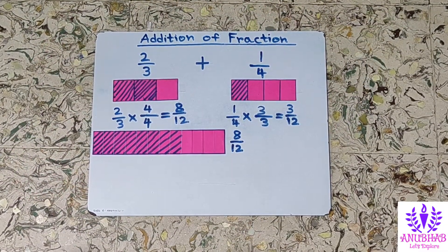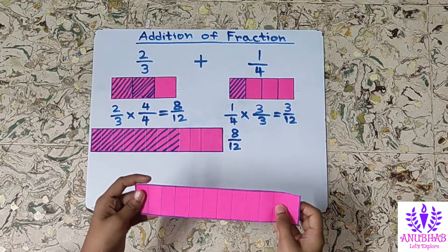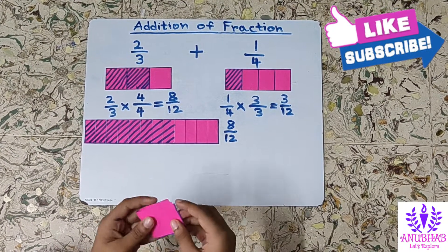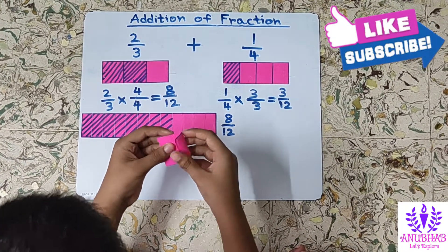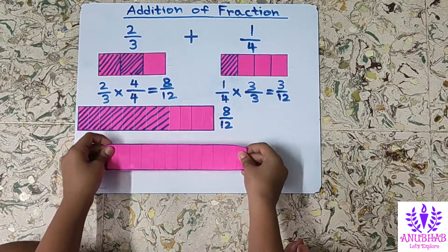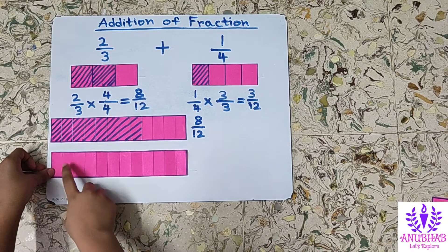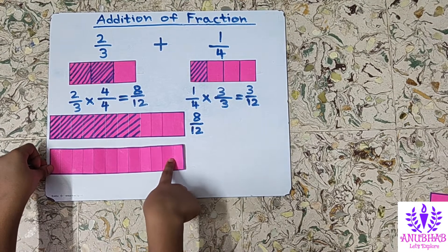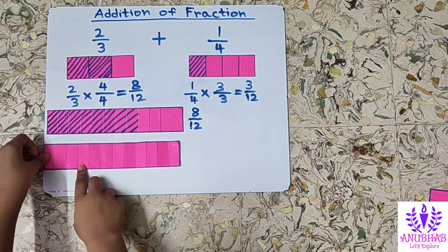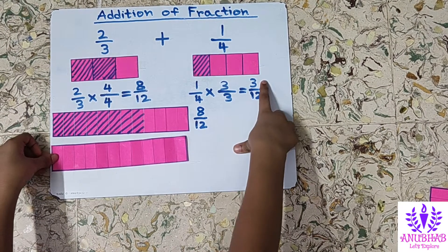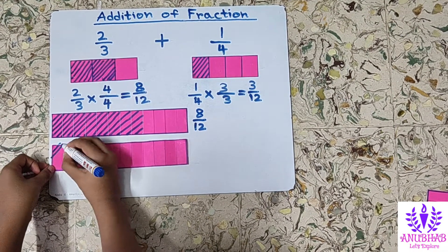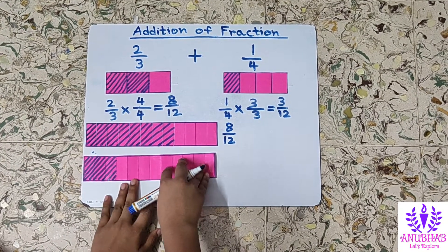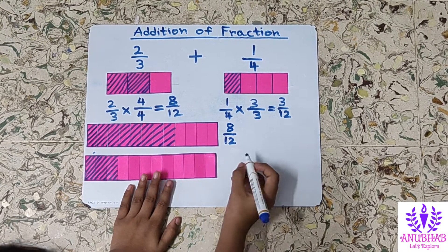Now take another strip of colored paper. Now fold again into 12 equal parts. Now see these are 12 equal parts: 1, 2, 3, 4, 5, 6, 7, 8, 9, 10, 11, 12. Now we will shade 3 parts among these 12 parts because the numerator is 3. Now I have shaded 3 parts. This represents 3 by 12.